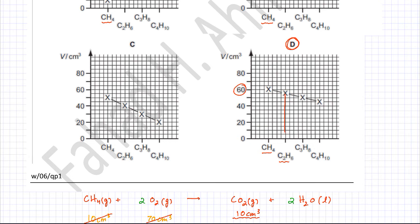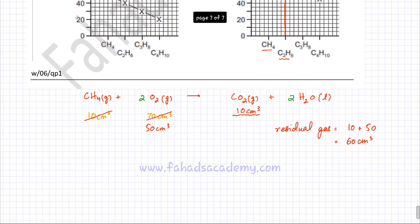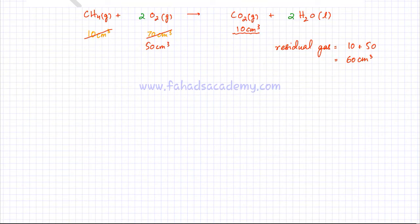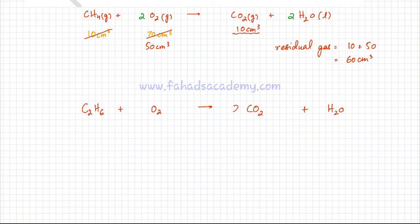For C2H6, graph D shows 55 cm³ of residual gas remaining at the end of the reaction. Let's confirm this. C2H6 reacts with O2 to produce CO2 and H2O. H2O is a liquid so we don't consider it. The balanced equation gives two CO2 molecules and three H2O molecules, requiring 3.5 O2 molecules.